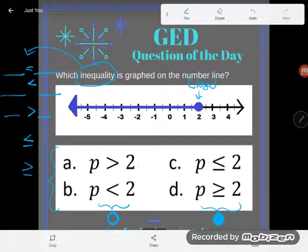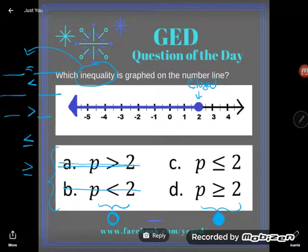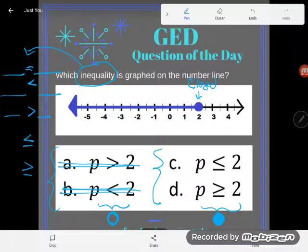And so it's got to be C or D. Now the other thing we should check on this number line is direction.